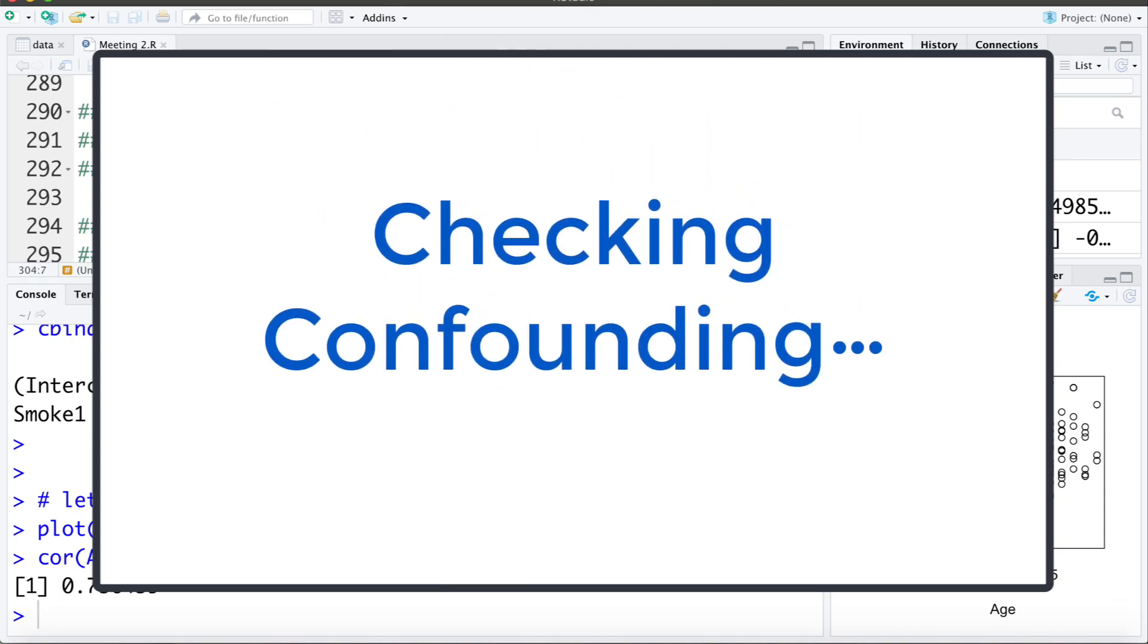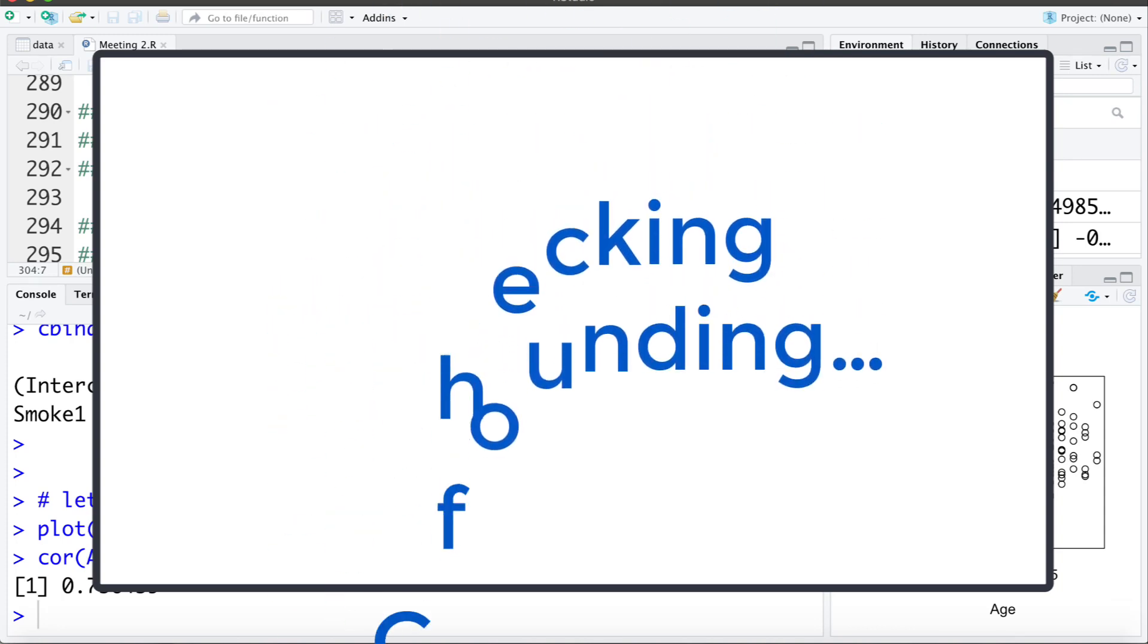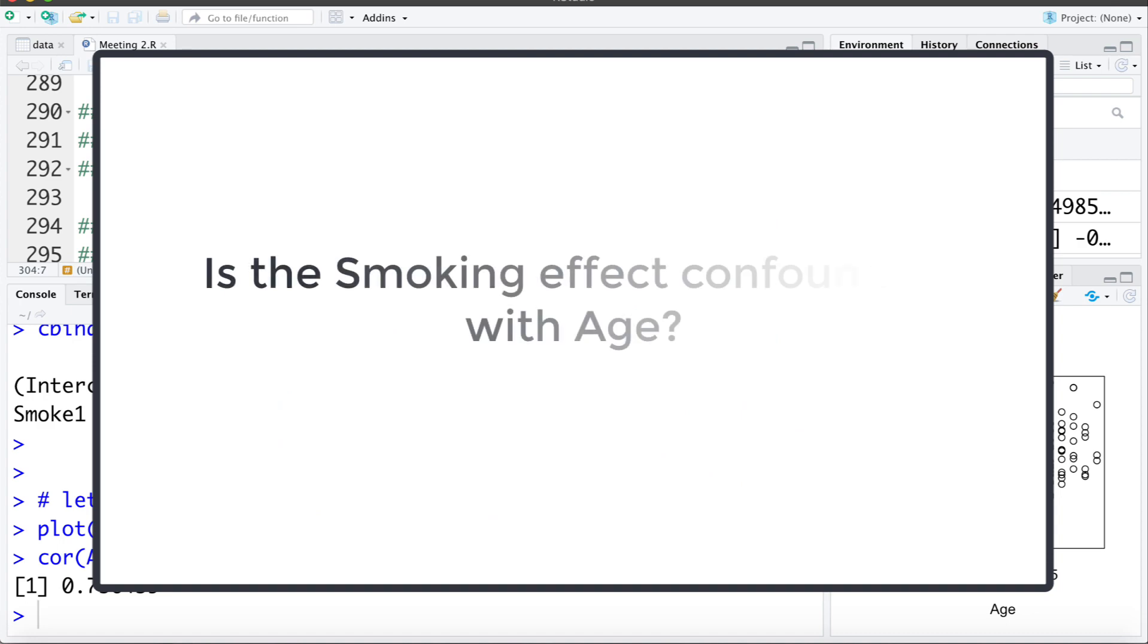Now that we've introduced the concept of confounding, let's check and see if age seems to be confounding the effect of smoking on FEV or lung capacity.